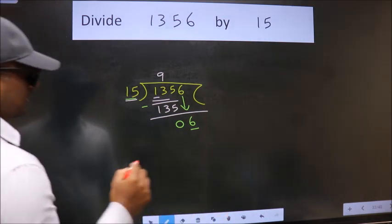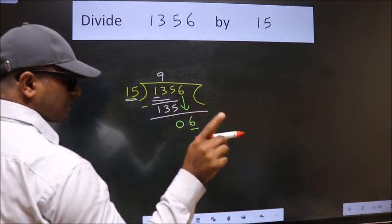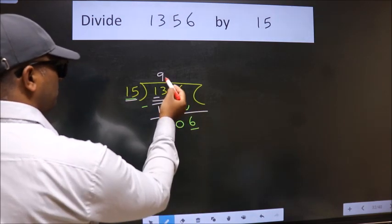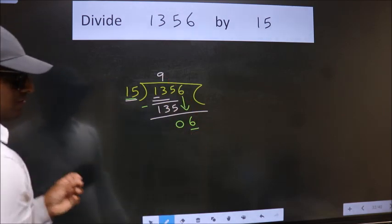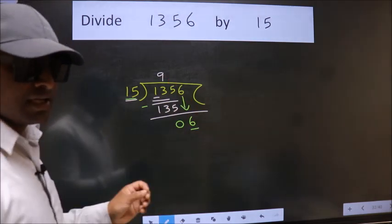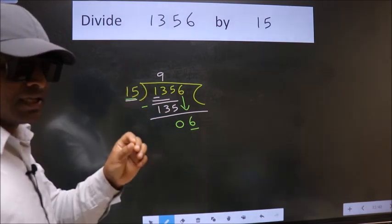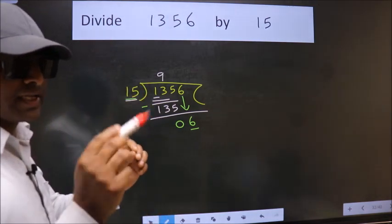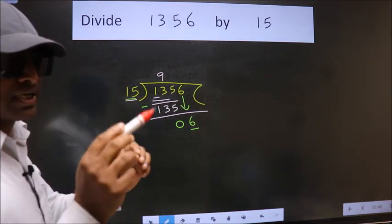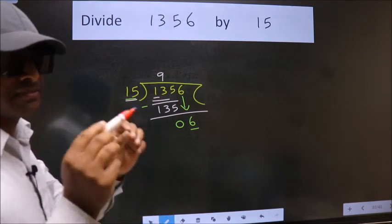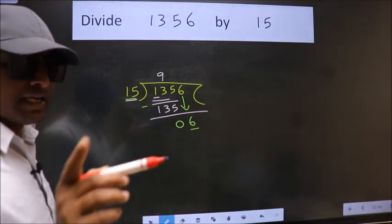Because just now you brought this number down, and in the same step you want to put a decimal and write 0, which is wrong. I repeat: bringing down the number and putting a decimal with 0, both at the same step, you should not do.